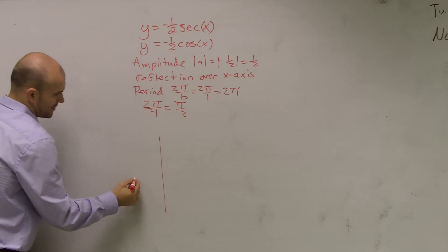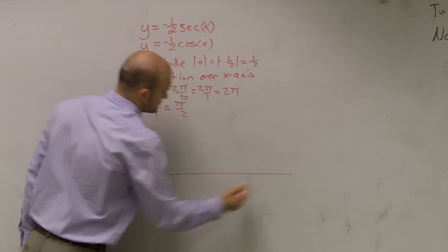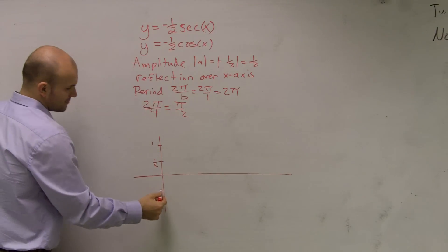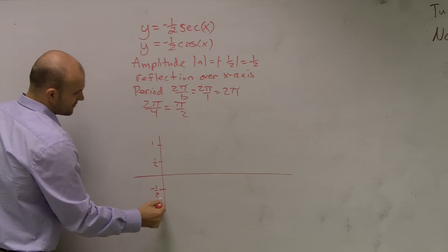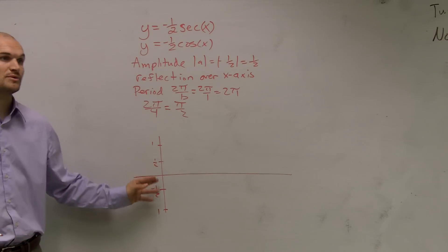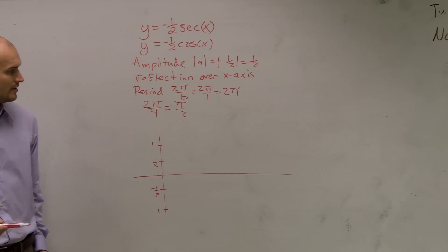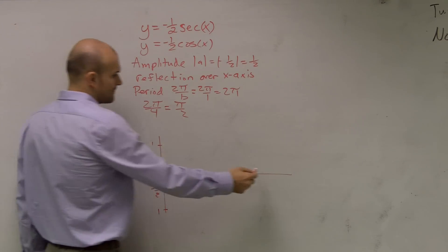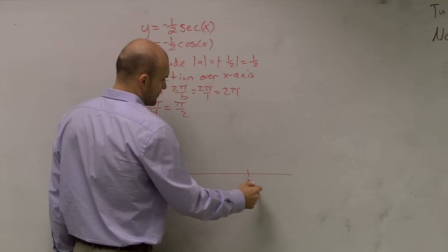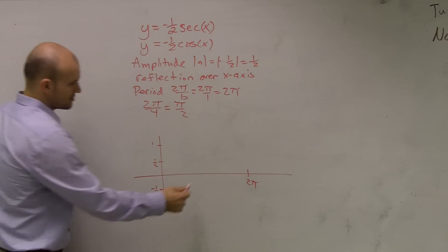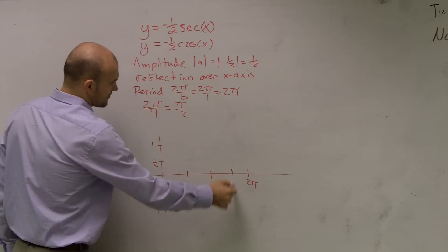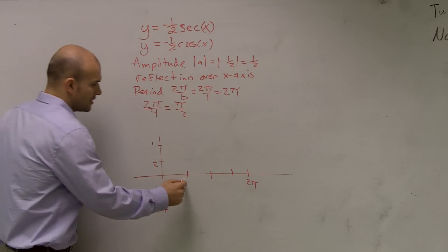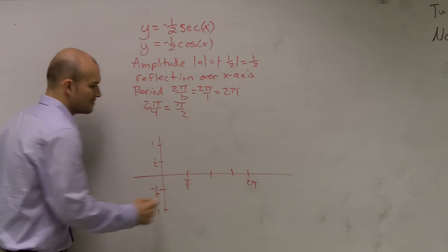Let's go ahead and draw a graph here. This is one-half, this would be 1, negative one-half, that would be 1. The period, the distance it takes for the graph to complete one complete function, is 2π. There's four even intervals. Between those four intervals, the distance is π over 2. So this first point is π over 2.